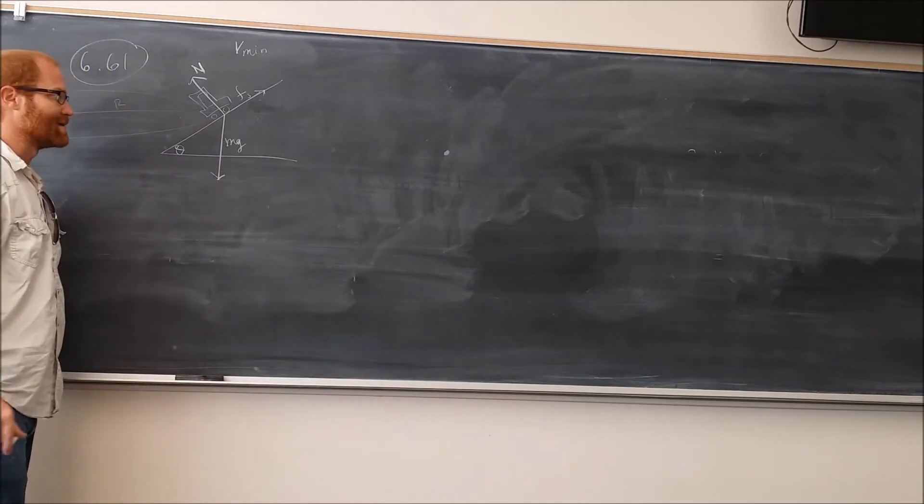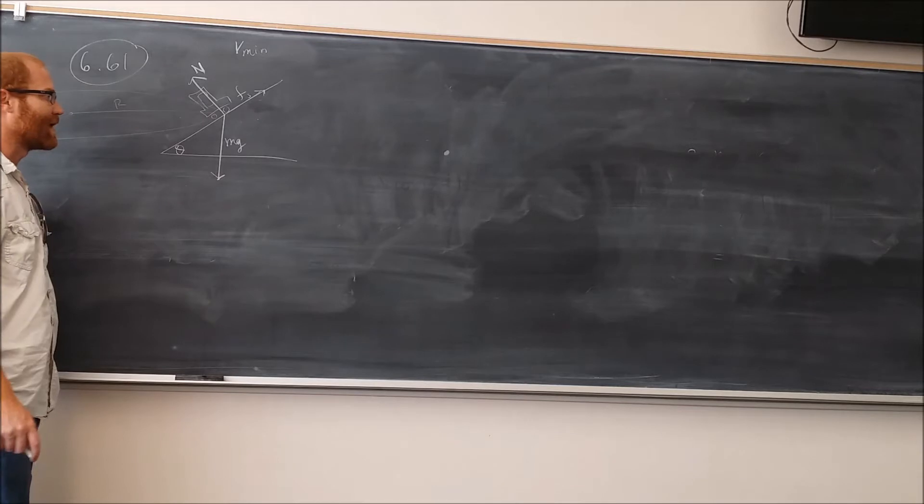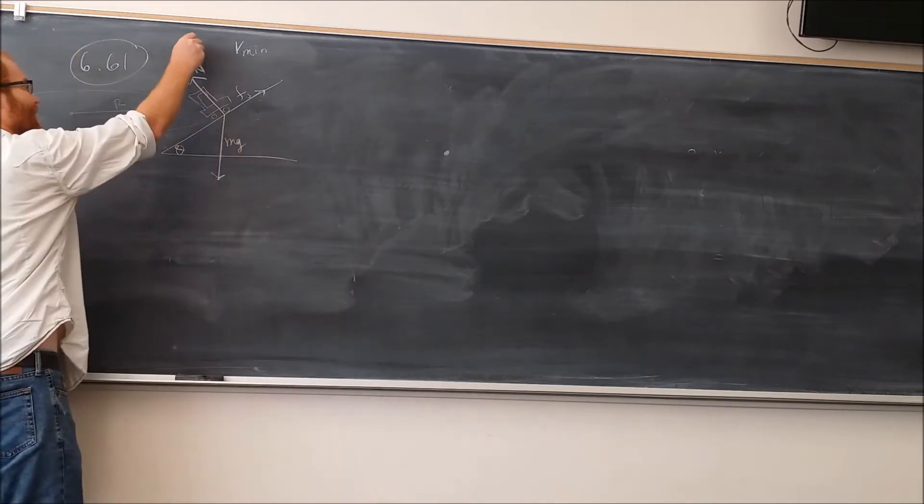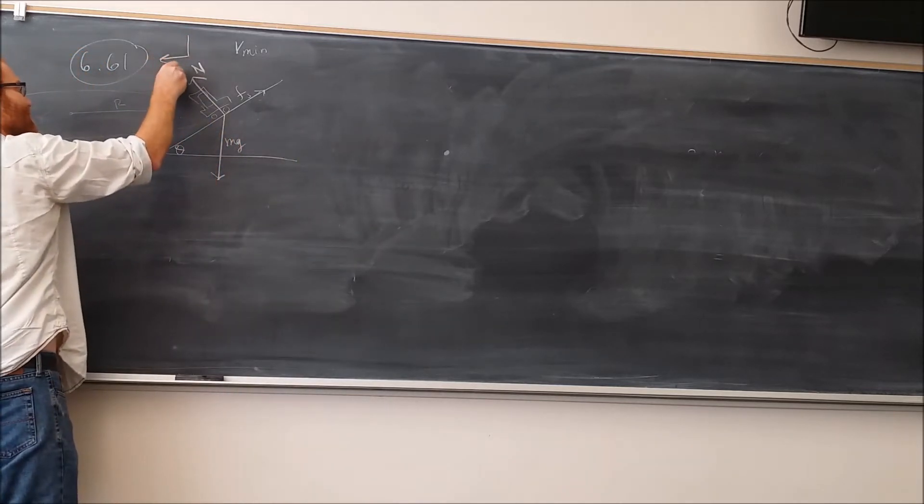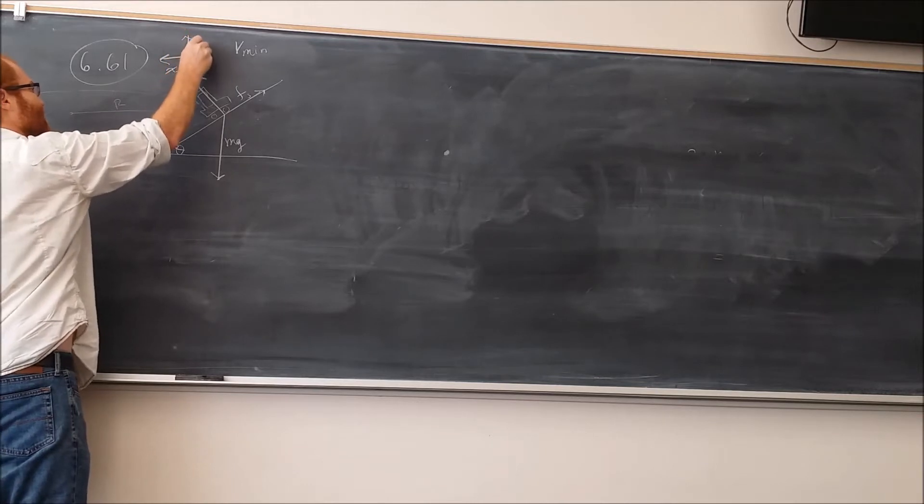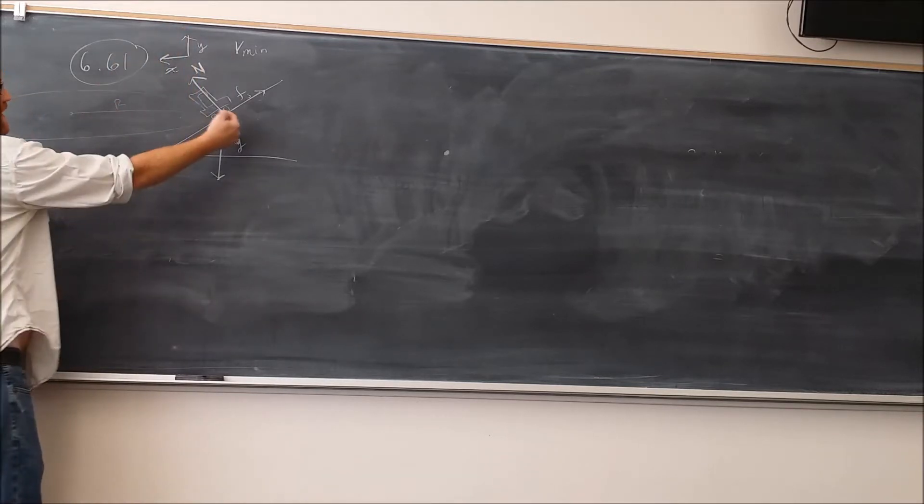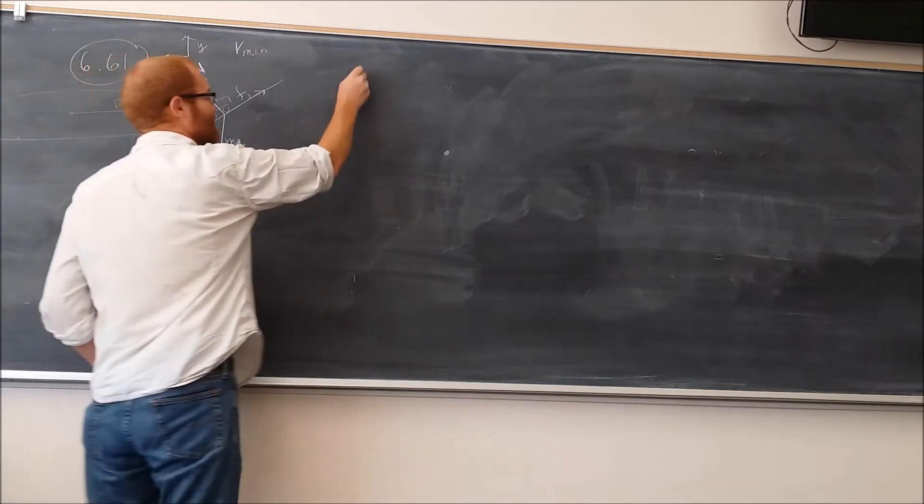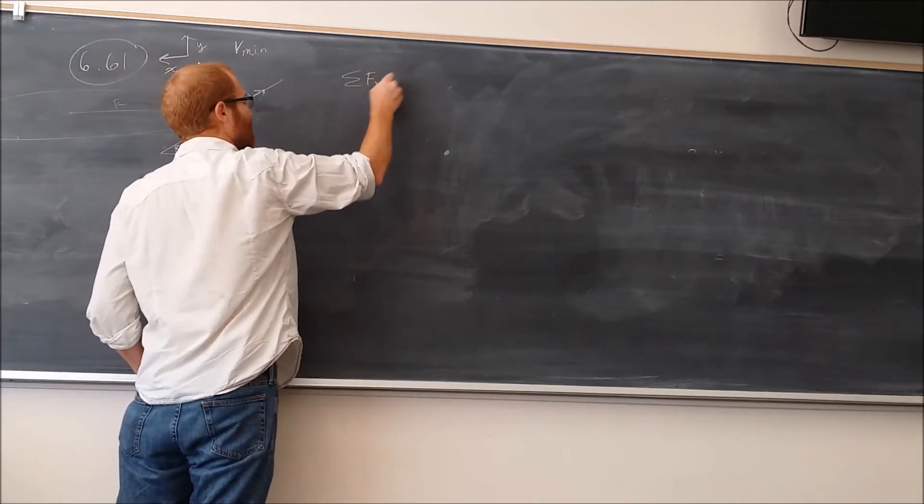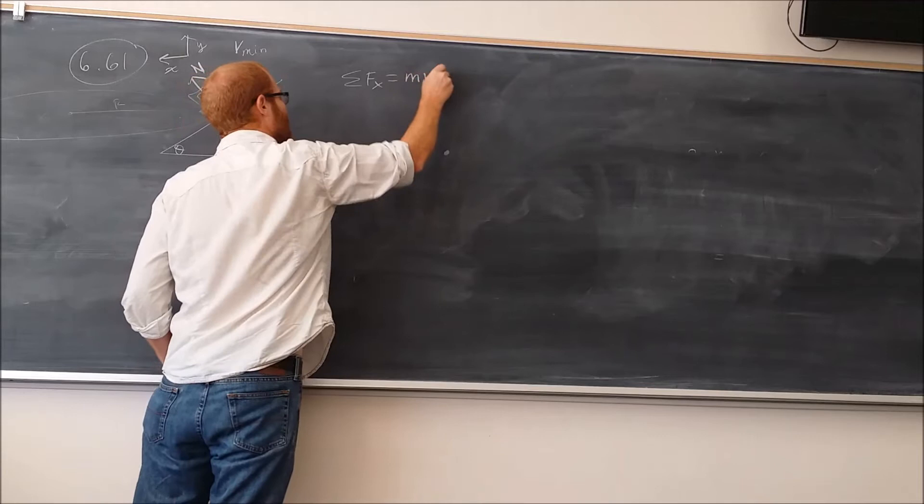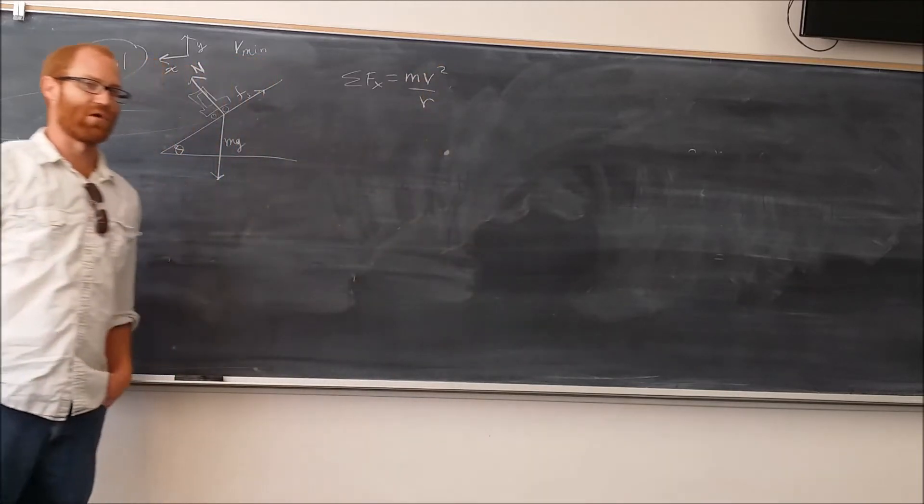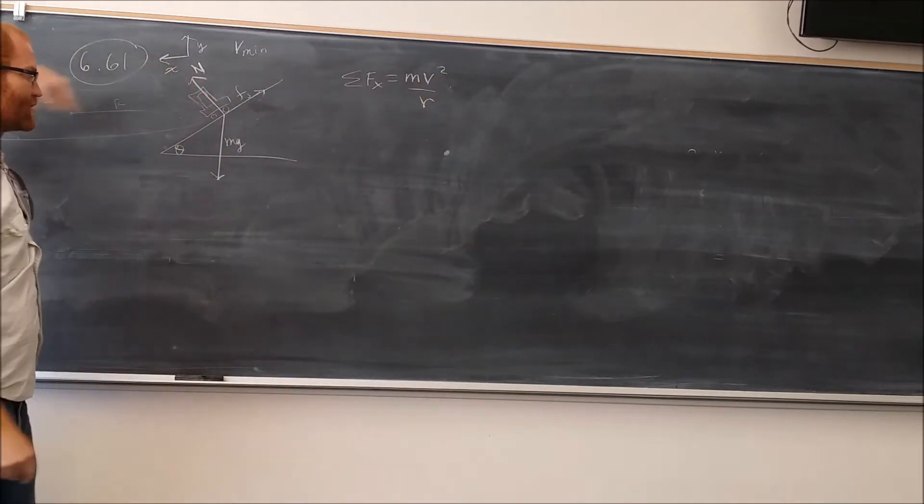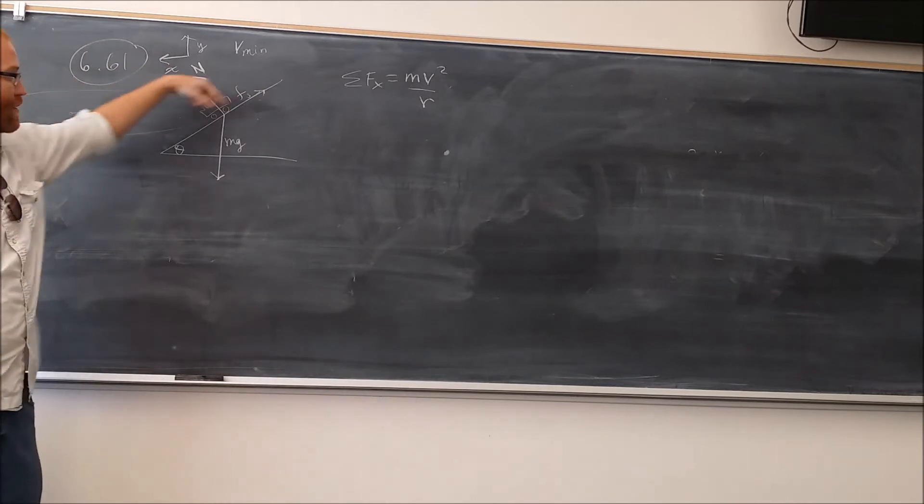The next thing to do to analyze this problem is to define an axis. So, we're going to define an xy axis here. I'm going to make our axis be like this. This is going to be the x direction to the left. This is going to be the y direction pointing up. I'm going to make the x direction this way because since the car is going around in a circle this way, that means that the net force in the x direction will be equal to mv squared over r because it's undergoing circular motion, staying at the same radius the entire time.